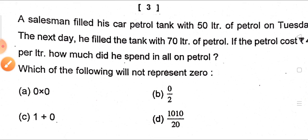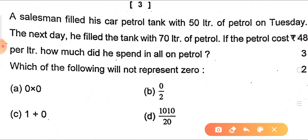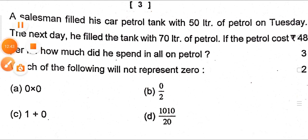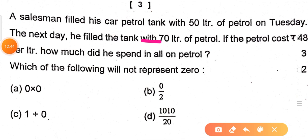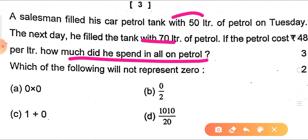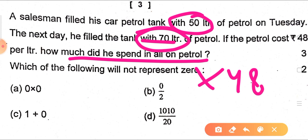Next question (which I gave you in the quiz): a salesman fills his tank with 50 liters of petrol on the first day and 70 liters on the next day. The petrol cost is ₹48 per liter. First find total petrol: 50 + 70 = 120 liters. Then multiply by 48 to get the total amount spent. Tell me your answer in the comment section.